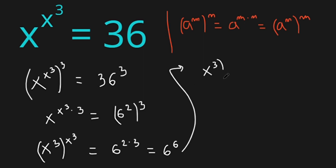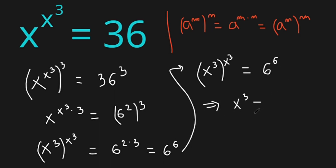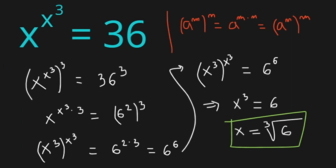So we have x to the power of 3, all this to the power of x to the power of 3, is equals to 6 to the power of 6. This means x to the power of 3 is equals to 6, and x is equals to the cube root of 6. And this is our result.